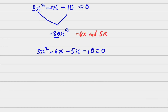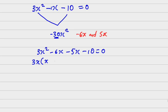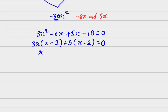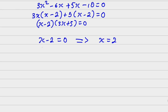Factorizing: 3x(x minus 2) plus 5(x minus 2) equals zero, so (x minus 2)(3x plus 5) equals zero. Therefore x minus 2 equals zero gives x equals 2, and 3x plus 5 equals zero gives x equals minus 5 over 3.